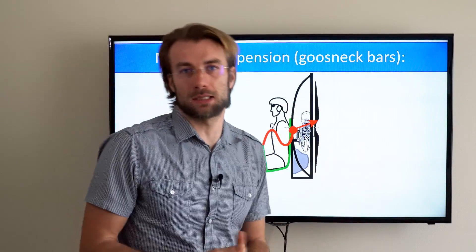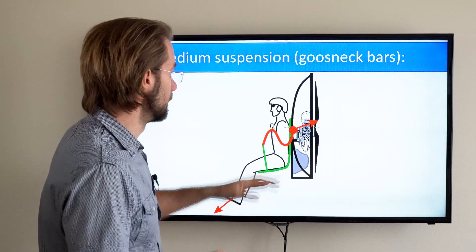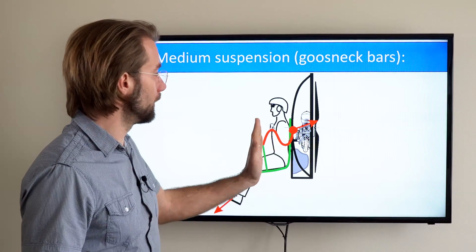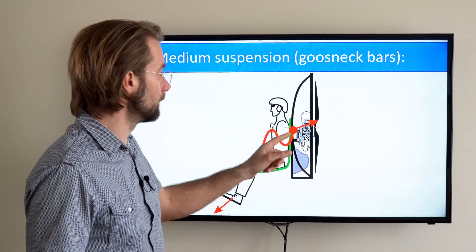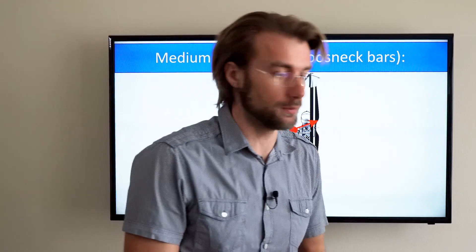So this is exactly what happens with the gooseneck bars, the medium suspension. The pilot leans with his upper body against the frame exactly in the pivot point so the paramotor does not pitch forward or backwards.